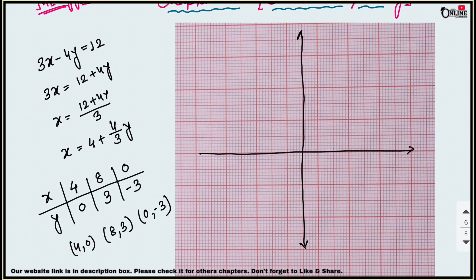Always use a scale. I'm just drawing roughly here. The middle one is the origin, 0. Mark 1, 2, 3, 4 along the axes. First point: (4, 0) — go to 4 on the x-axis. Second point: (8, 3) — go to 8 on x, then 3 up on y. Third point: (0, −3) — at origin x, go 3 down. Now join these three points.